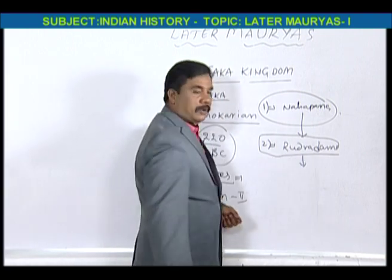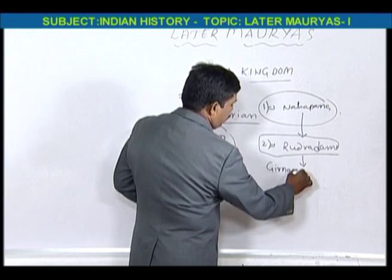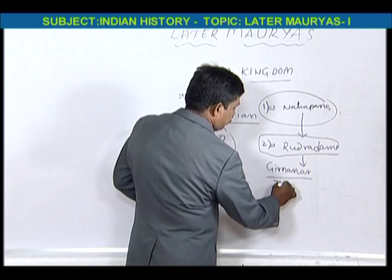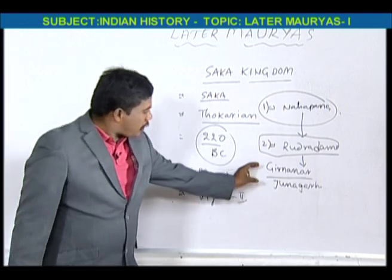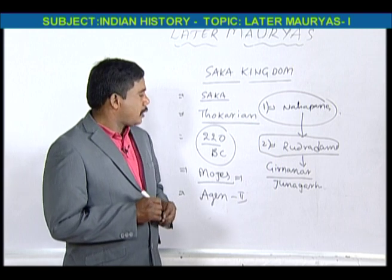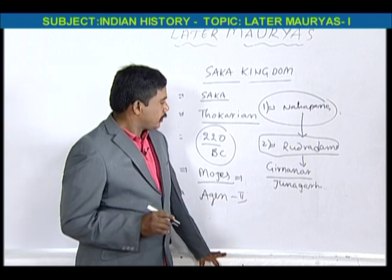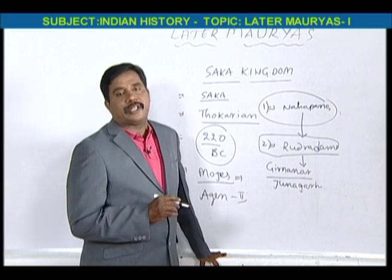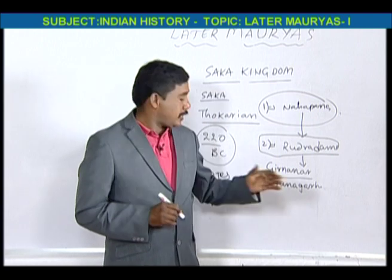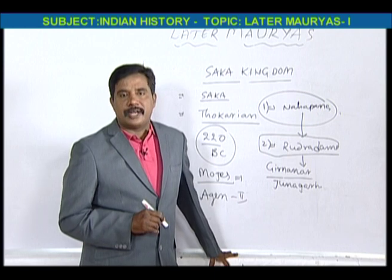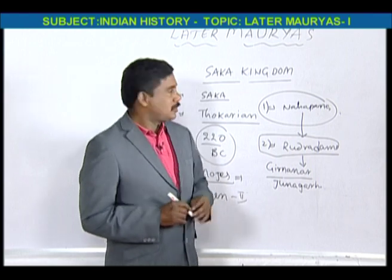Rudradaman laid a Girnar inscription, also called the Junagar inscription. These two names refer to the same inscription. This is the first Sanskrit inscription in India, laid by Rudradaman, who was the important king of the Malva Kshatrapas.